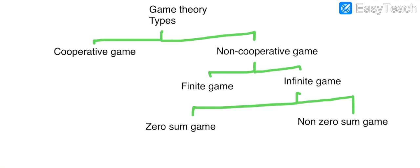Here is a tree diagram showing the types of game theory. Game theory has two main types: cooperative games and non-cooperative games. Non-cooperative games are further divided into finite and infinite games, and infinite games are divided into zero-sum games and non-zero-sum games. We will discuss these types in detail in the next lecture.